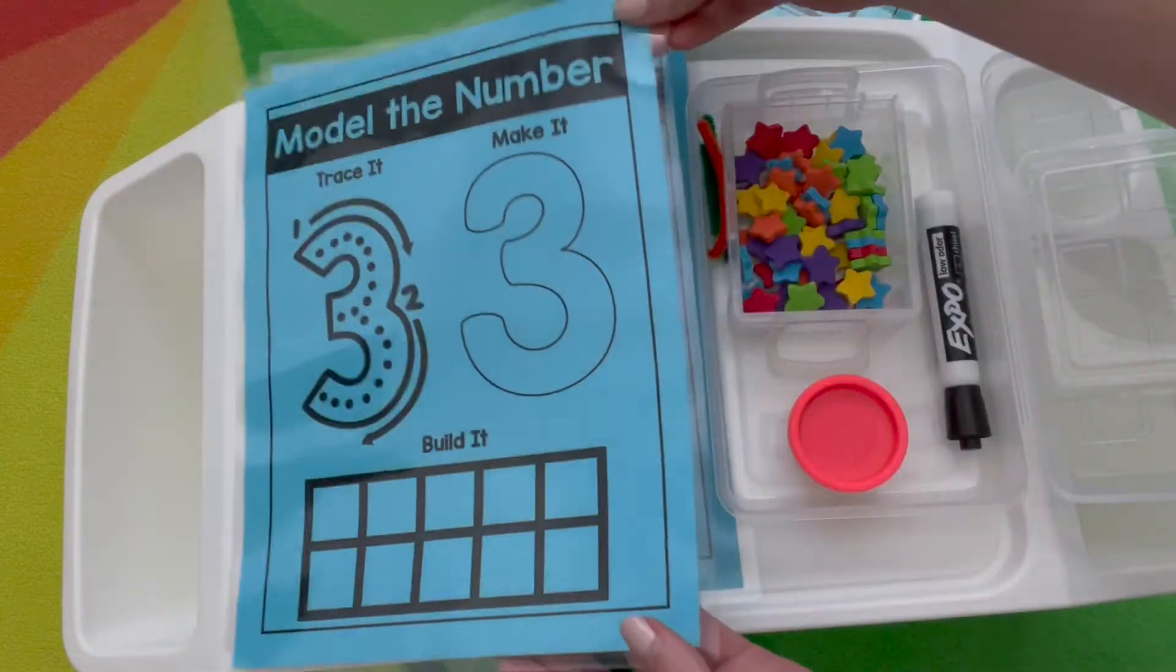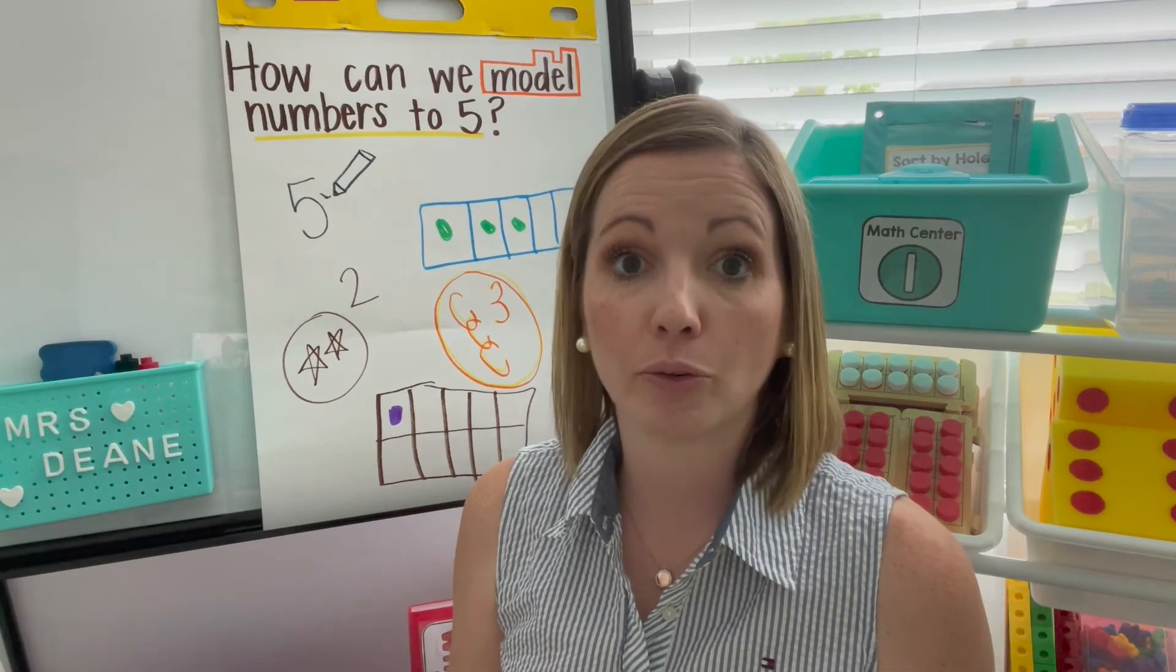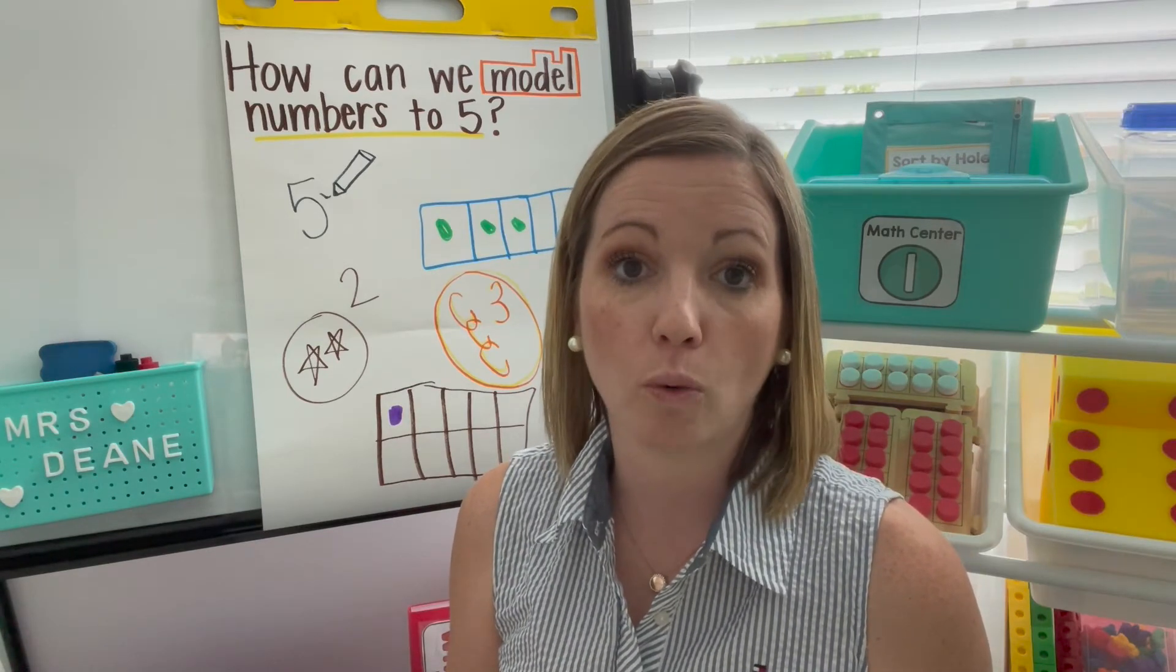Once they're finished, they'll put those materials away and grab out the next mat to model them. Once you've finished with the activities, come back together on the carpet and revisit that essential question. How can we model numbers to five? And call on students to hear their different responses.